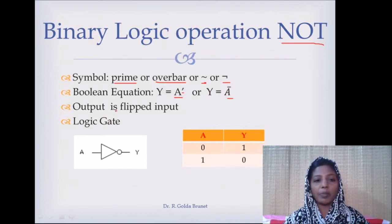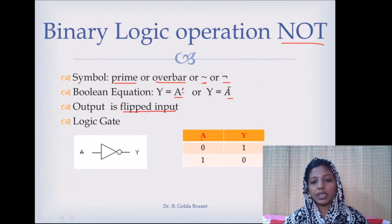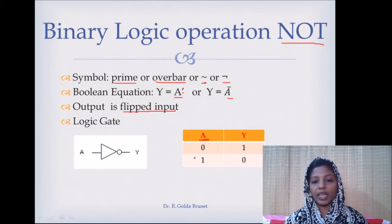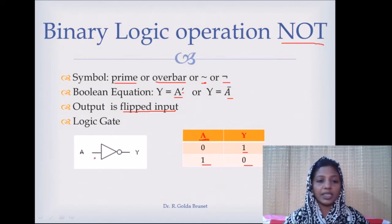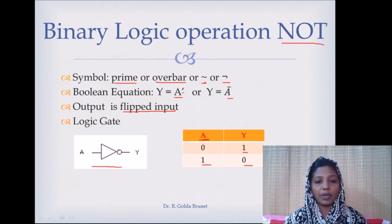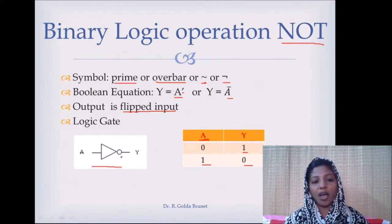We write the equation as: output Y is equal to A complement, or A bar. Since this is a complement operation, the output is the flipped input. The truth table has one input variable: if you feed in 0 you get 1 as output, and if you feed in 1 you get 0 as output. The graphical representation uses a triangle as a buffer and a bubble to represent the complement.